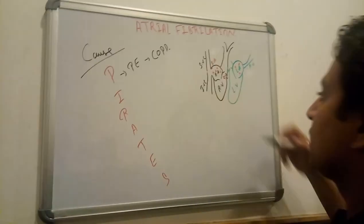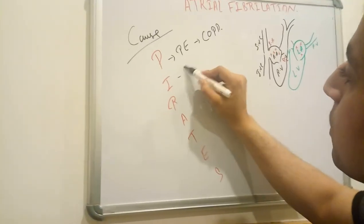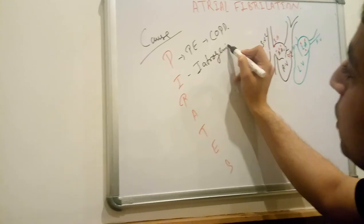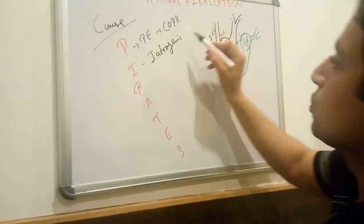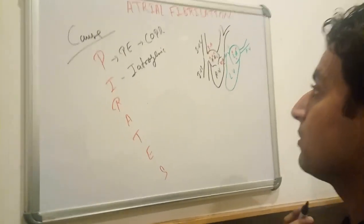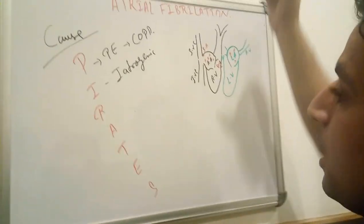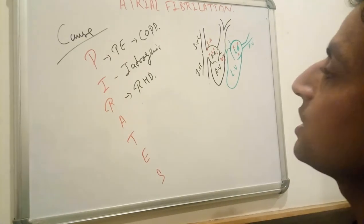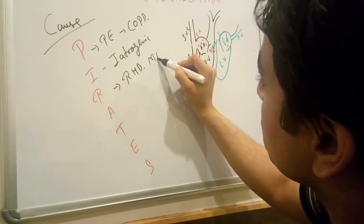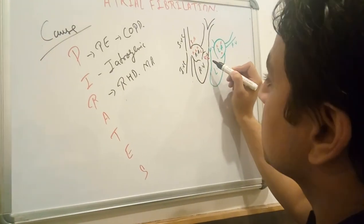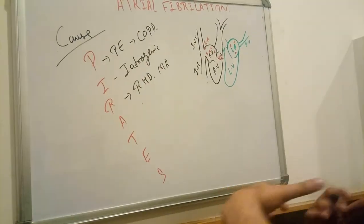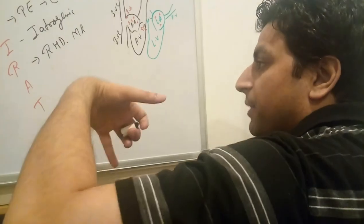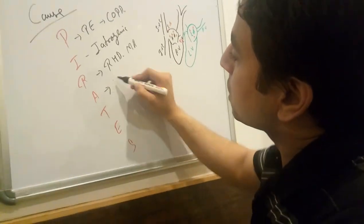I represents iatrogenic — medically or surgically induced atrial fibrillation, such as from heart surgery like CABG. R represents rheumatic heart disease, including mitral regurgitation and mitral stenosis, which cause ectopic beats and increased back pressure. Atherosclerosis is also a cause.